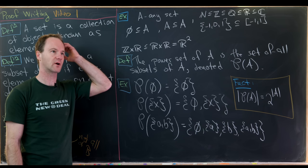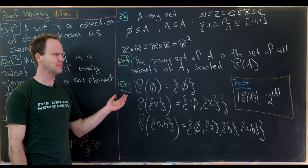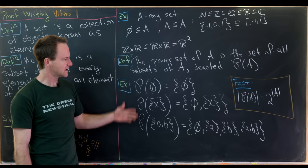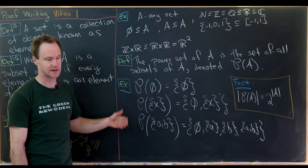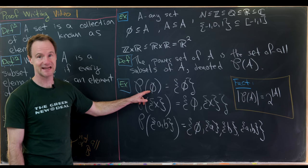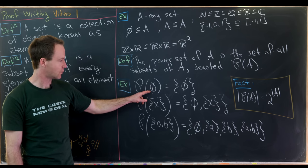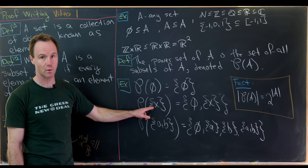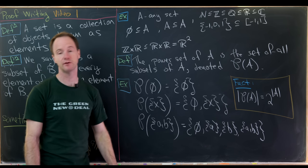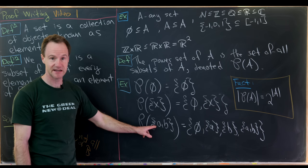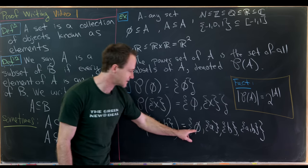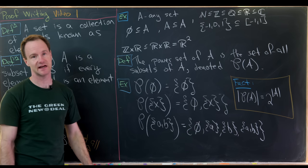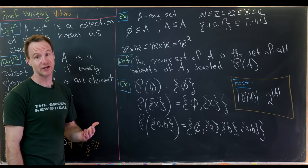Right now this formula only makes sense for finite sets, though you can make meaning of it for infinite sets if you want to dive deeper. Let's verify: the empty set has 0 elements, 2⁰ = 1, and its power set has exactly 1 element. The singleton has 1 element, 2¹ = 2, and its power set has 2 elements. The doubleton has 2 elements, 2² = 4, and its power set has 4 elements. We'll prove this holds in general later.